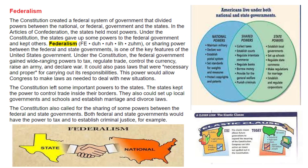Federalism. The Constitution created a federal system of government that divided powers between the national or federal government and the states. In the Articles of Confederation, the states held most powers. Under the Constitution, the states gave up some powers to the federal government and kept others. Federalism — sharing power between the federal and state governments — is one of the key features of the United States government. Under the Constitution, the federal government gained wide-ranging powers to tax, regulate trade, control the currency, raise an army, and declare war. It could also pass laws that were 'necessary and proper' for carrying out its responsibilities — a clause called the elastic clause.